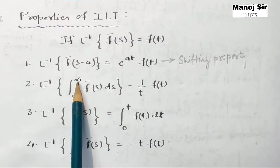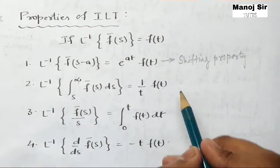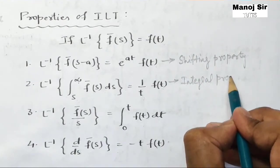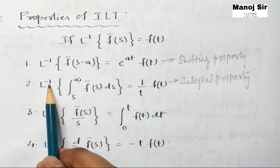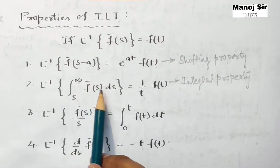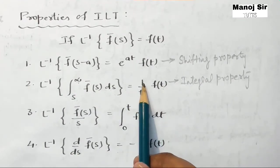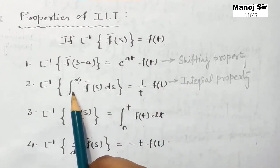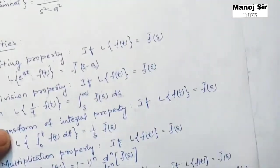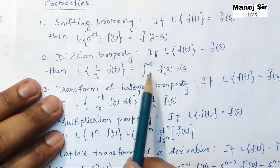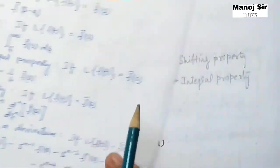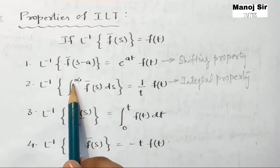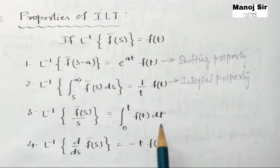Now the second property is the integral property. Inverse Laplace transform of the integration from s to infinity of f-bar of s ds equals 1 upon t times f(t). Division property in the case of Laplace transform becomes integral property in the case of inverse Laplace transform. In the Laplace transform, the division property states: Laplace transform of f(t) upon t equals integration from s to infinity of f-bar of s ds.